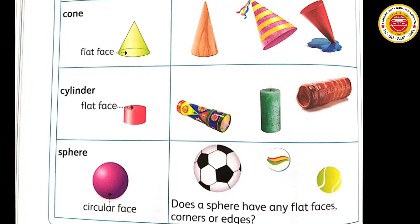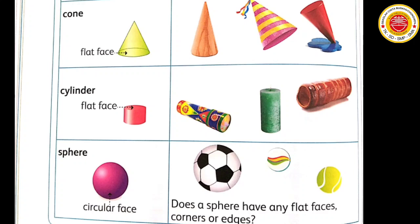Sekarang bentuk tabung atau silinder. Yang berwarna-warni ini adalah wadah konfeti yang dapat mengeluarkan potongan kertas warna-warni dan bunyi pop sewaktu diputar. Lilin ini juga berbentuk tabung serta roti ini. Sekarang kita ke sphere, bola. Contohnya ada bola kaki, marble atau kelereng, dan bola tenis.